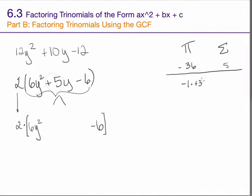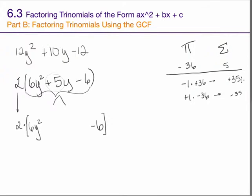What are the different ways that I can write negative 36 as a product of two numbers? Negative 1 times positive 36 is one way. Positive 1 times negative 36 is another. There are lots of others as well, but note that the positive sum comes from adding together a small negative and a large positive, not the other way around. So I don't need any of the products where the large number is negative, only the ones where the small number is negative.